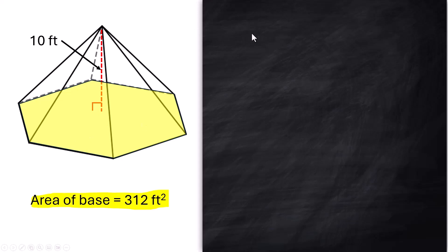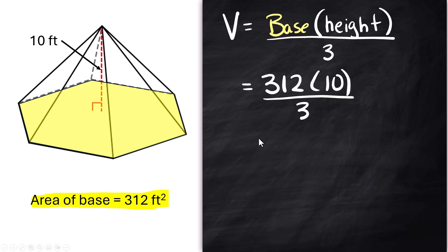Well volume is always going to be base times height and if that went straight up but it's pointy so you've got to divide by three. And all you do is substitute in the area of that base which is 312 take it times the height which is 10 divide by 3 and we end up with this calculation. So our final answer is 1040 cubic feet. I'll see you in the next lesson bye.